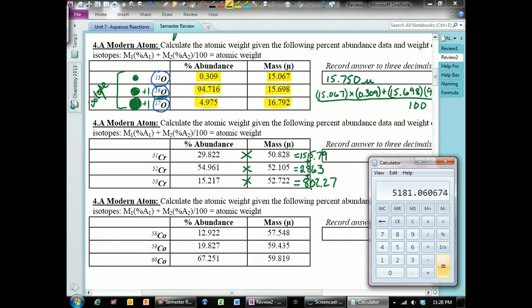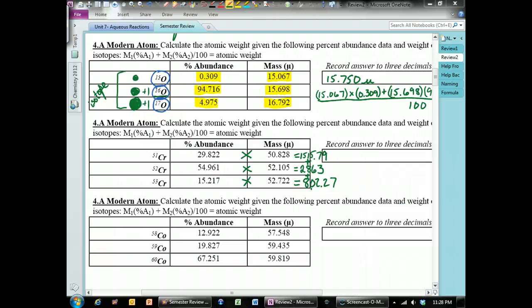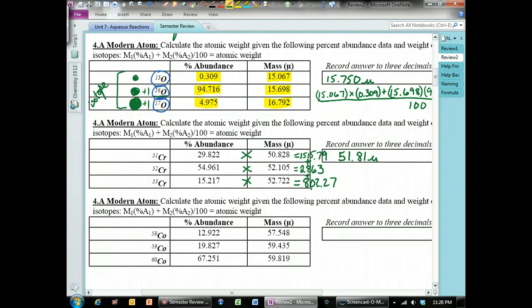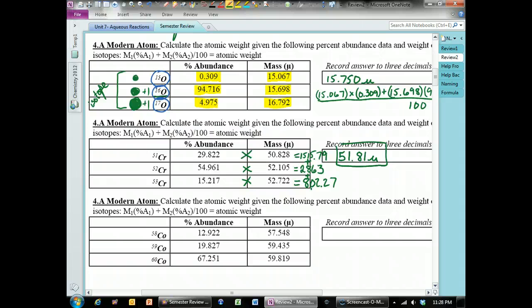And then, we're going to divide that by 100. And we get 51.81 atomic mass units. And that is the average weight of all those isotopes of chromium from this example.